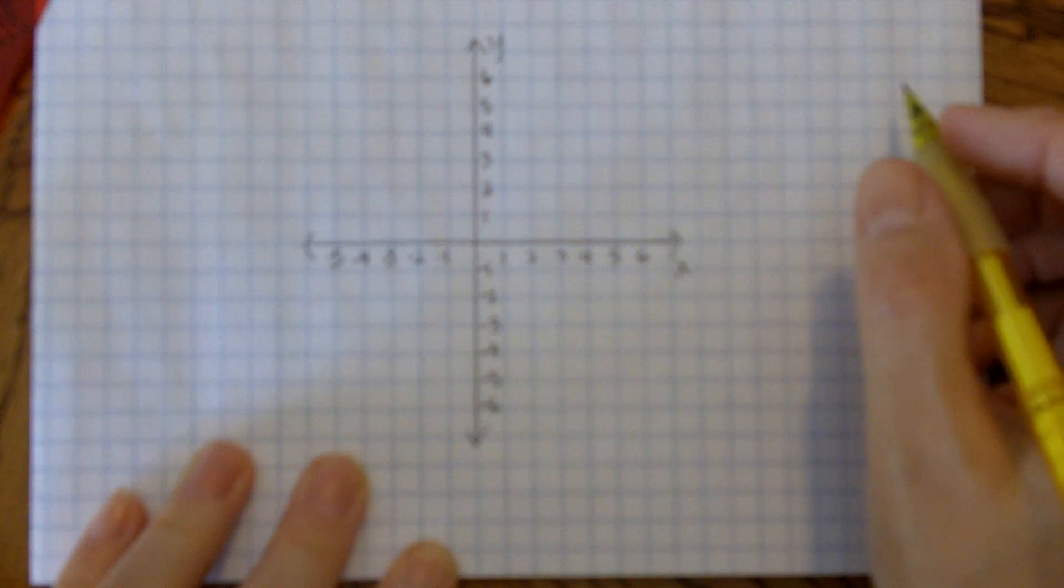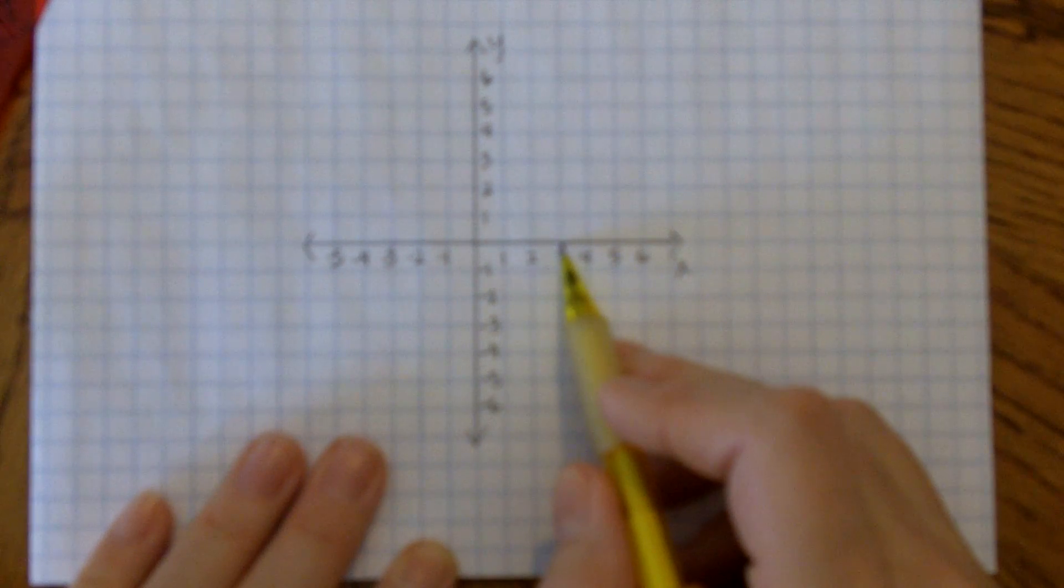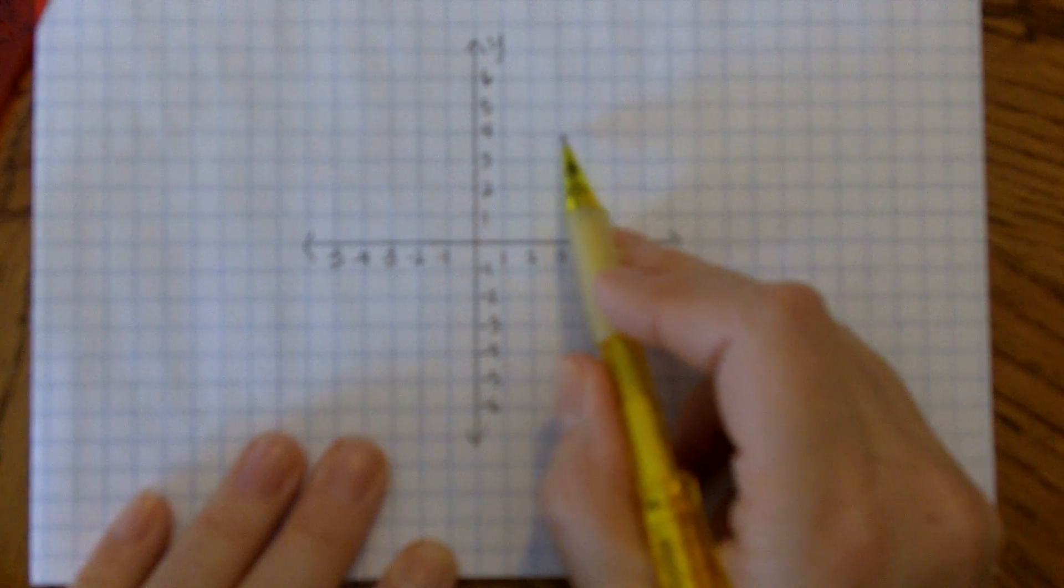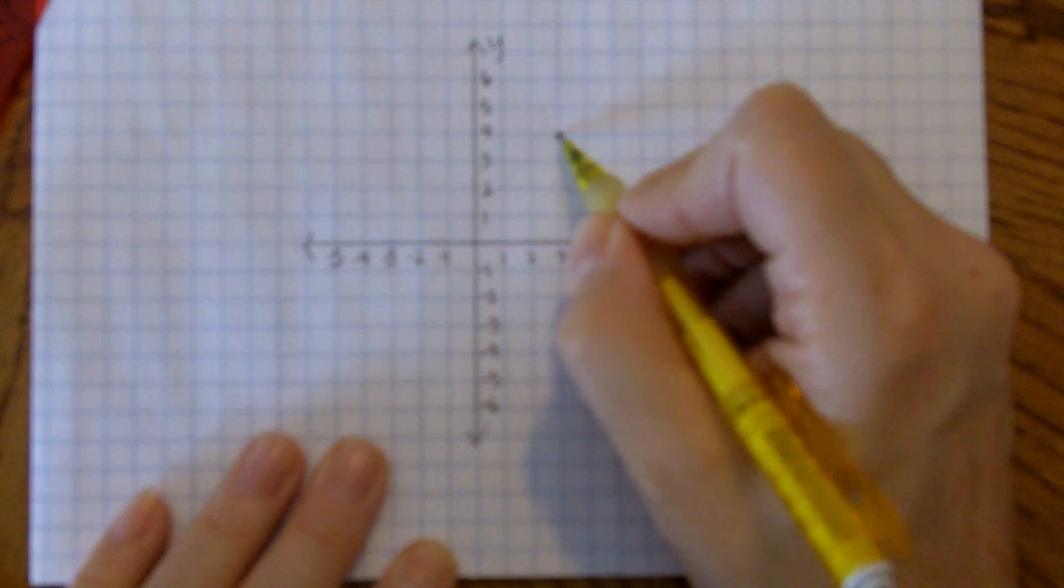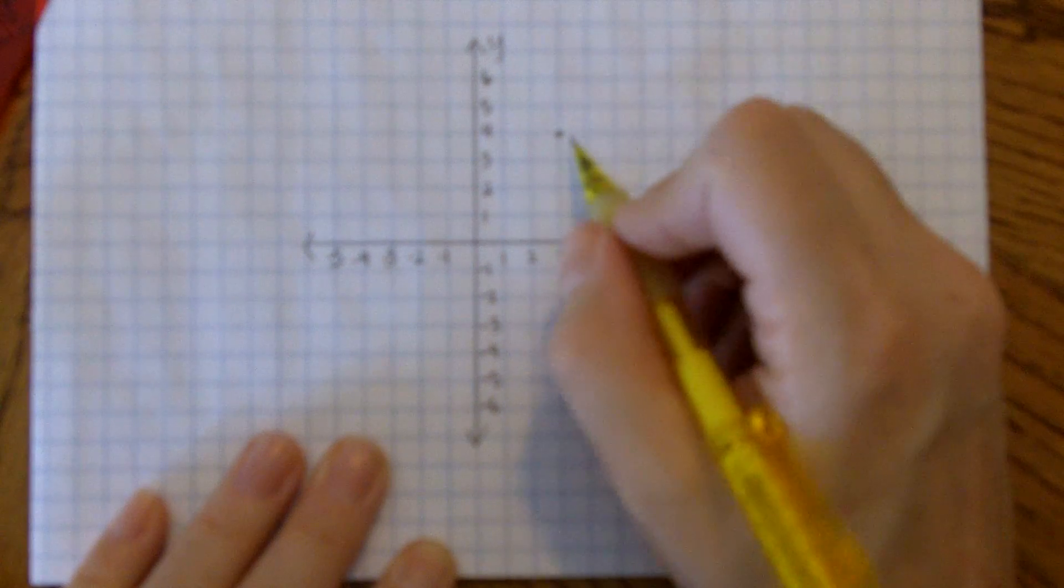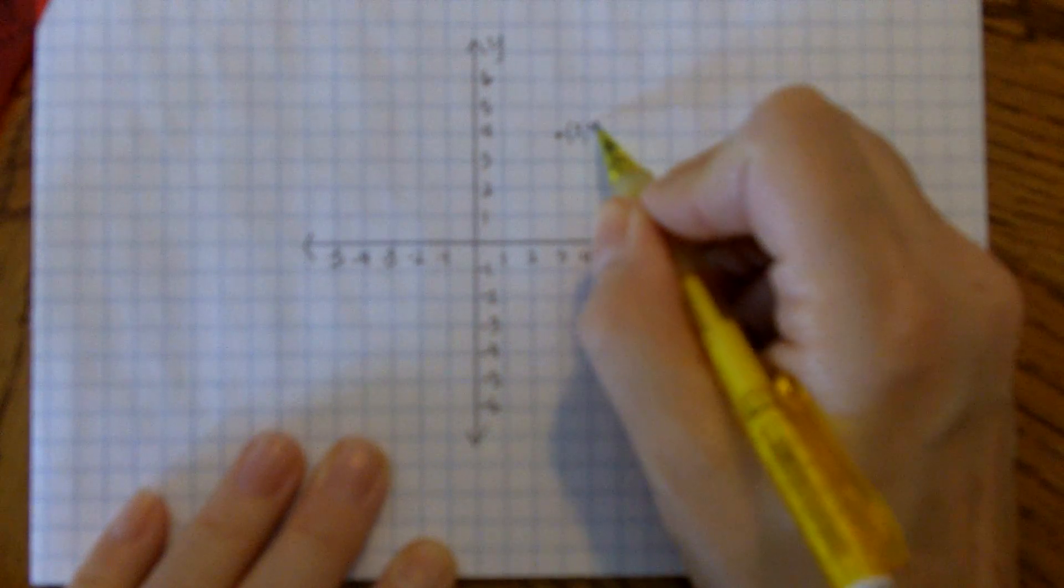My first point is going to be represented by the ordered pair 3, 4. So that means I start at the origin, I go three spaces to the right, and four spaces up. And then make just a small dot, because these are infinitely small. And somewhere near that, I'll write the ordered pair 3, 4.